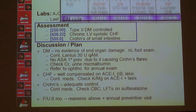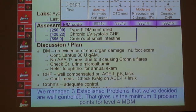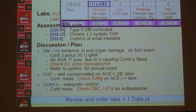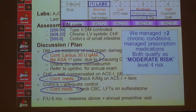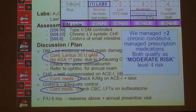For medical decision-making: on problem points, I've managed three established well-controlled problems, each worth one point — that's the minimum three points for Level 4. For data gathering, reviewing old labs and ordering new labs gives one point. For risk level, I've managed prescription medications and managed two or more chronic conditions — either criterion alone puts me at moderate (Level 4) risk. Note: 'continuing current meds' or naming a specific medication is evidence of managing prescription medications; vague phrases like 'continue treatment' or 'continue above' do not specifically address medications and may not earn Level 4 credit.